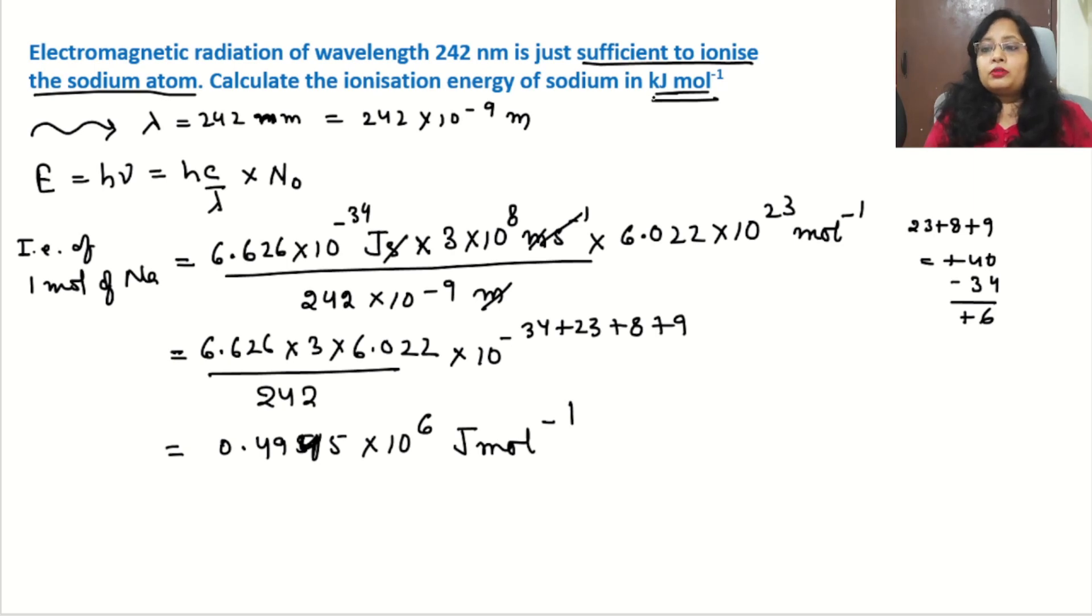But still there is a twist. The answer should be in kilojoule per mole, so this joule per mole we will turn into kilojoule with the help of dividing by 1000. So how to write it? Dividing by 1000, we will write it multiplied by 10 to the power minus 3.